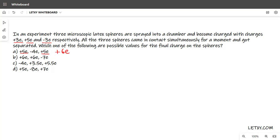We know that q1 + q2 + q3 in the beginning was +5e. These are the charges on the three spheres before they interacted together. So +3e plus +5e minus 3e - the -3e cancels with +3e.